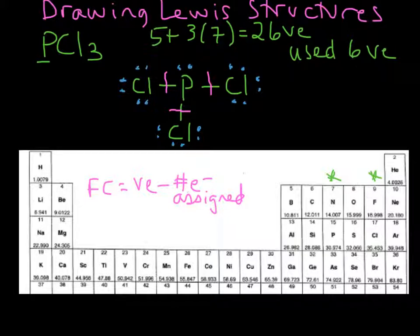The formal charge for chlorine is seven valence electrons, get that from the periodic table, minus the number assigned, which is six as lone pairs, plus that one, so seven, seven assigned.